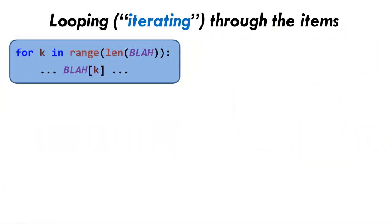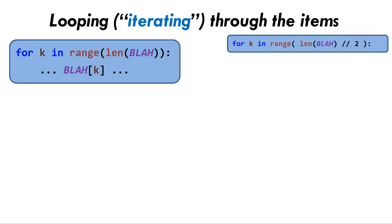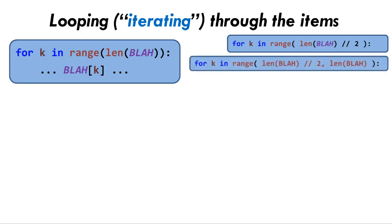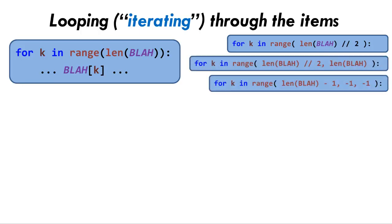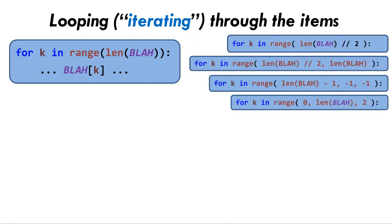Keep the basic pattern in mind, as shown here. If ever you need to go through part of the sequence, or in an order other than forwards, all you have to do is modify the range expression — as in the examples we just saw — for iterating through the first half of the sequence, or through the second half, or through the sequence backwards, or through the even-numbered items in the sequence.